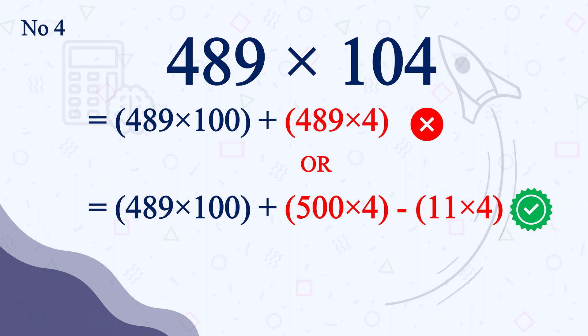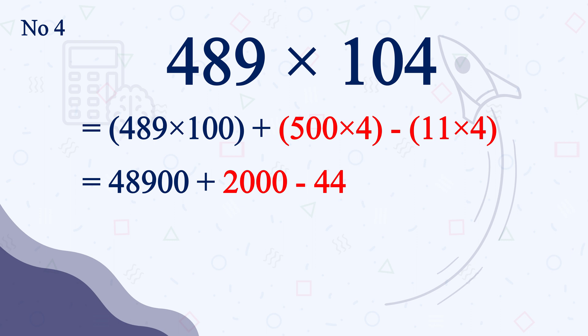So 48900 plus 2000 minus 44 or 50900 minus 44 is the answer which is 50856. Super easy and super fast.